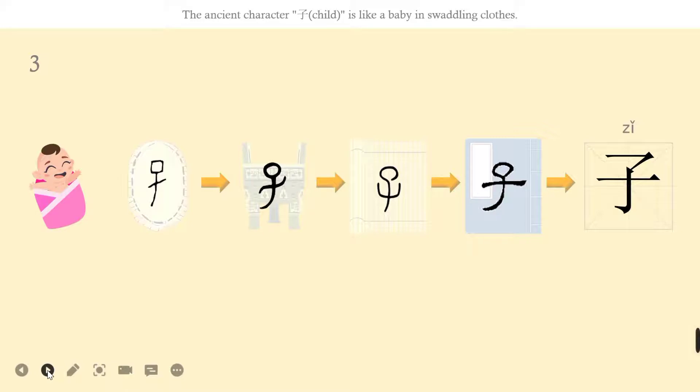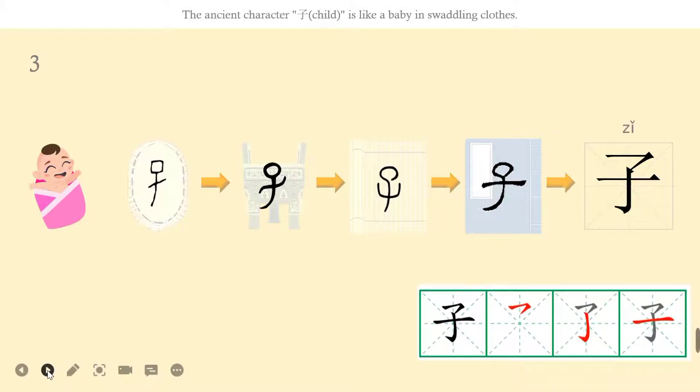Let's see how to write. Zǐ has three strokes. The first stroke is hénggōu. The second stroke is shùgōu. The third stroke is héng.